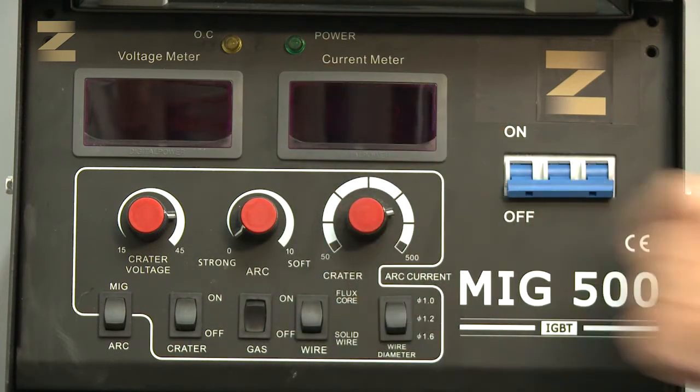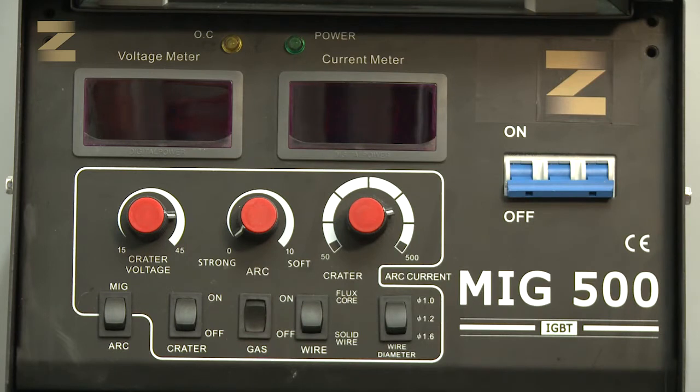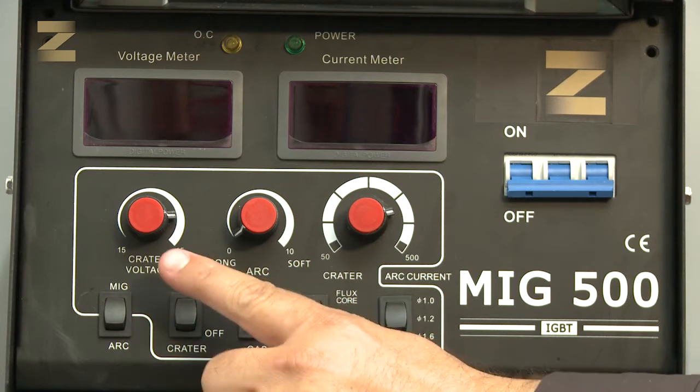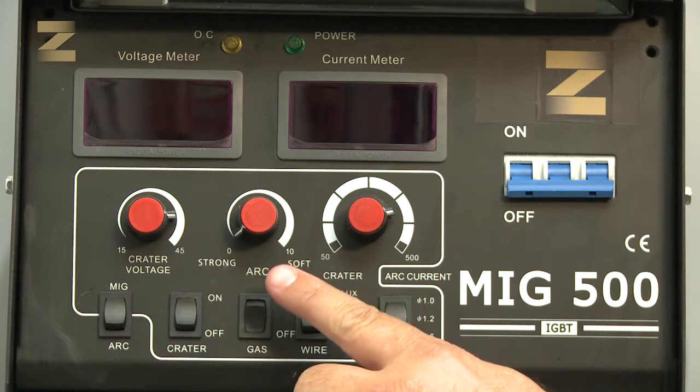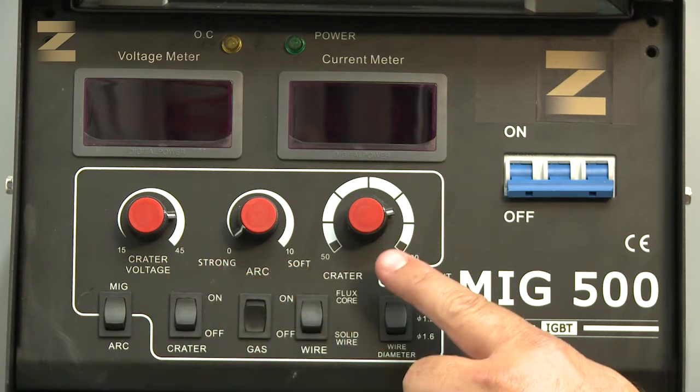There are three controls for electrode welding: voltage control, arc control, and a current adjustment and wire speed control.